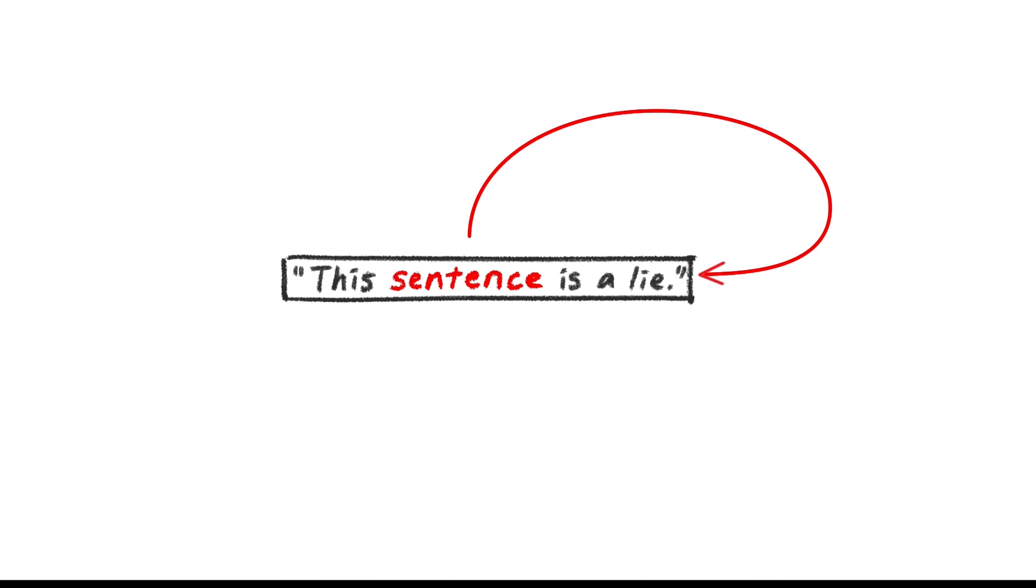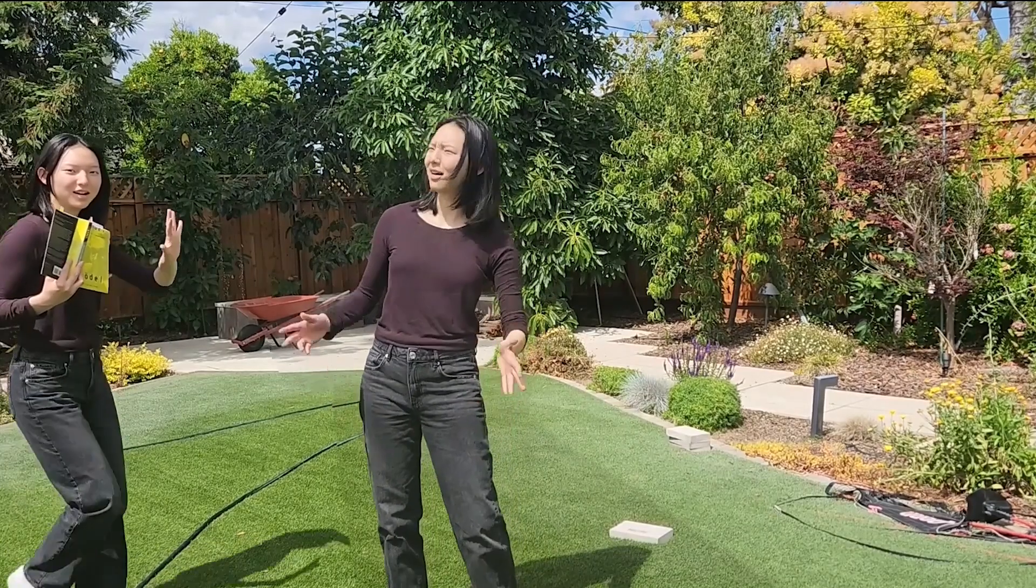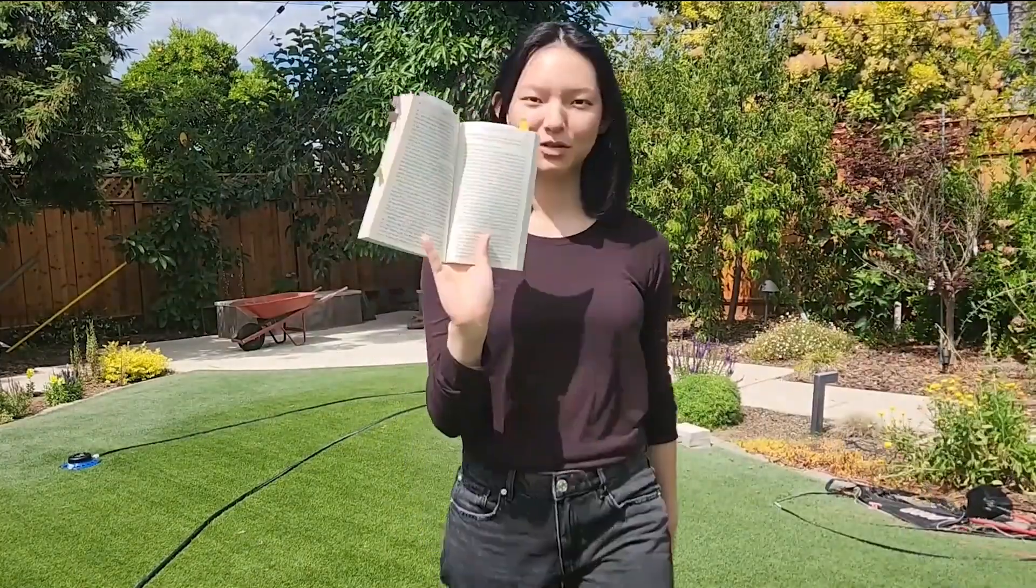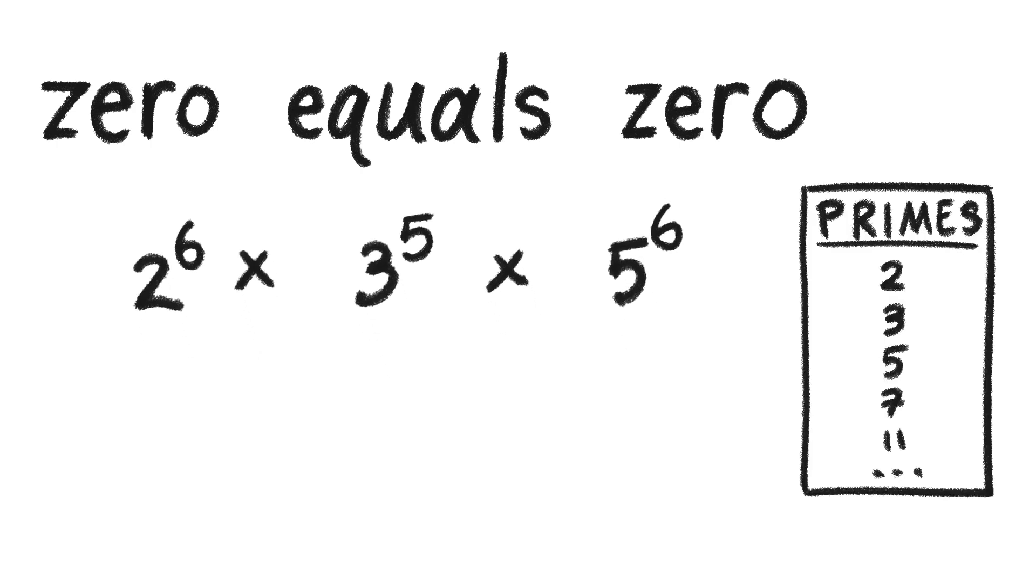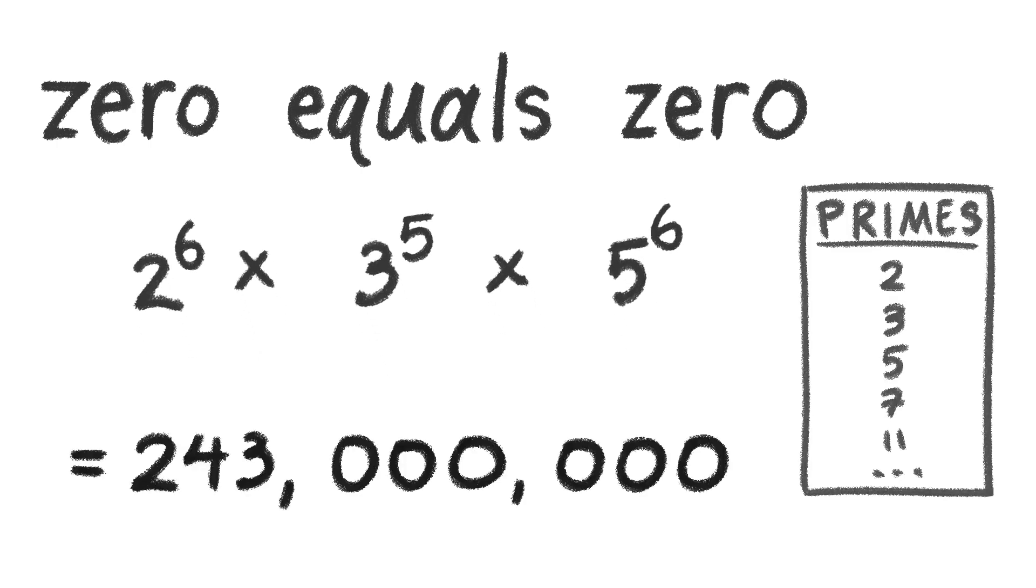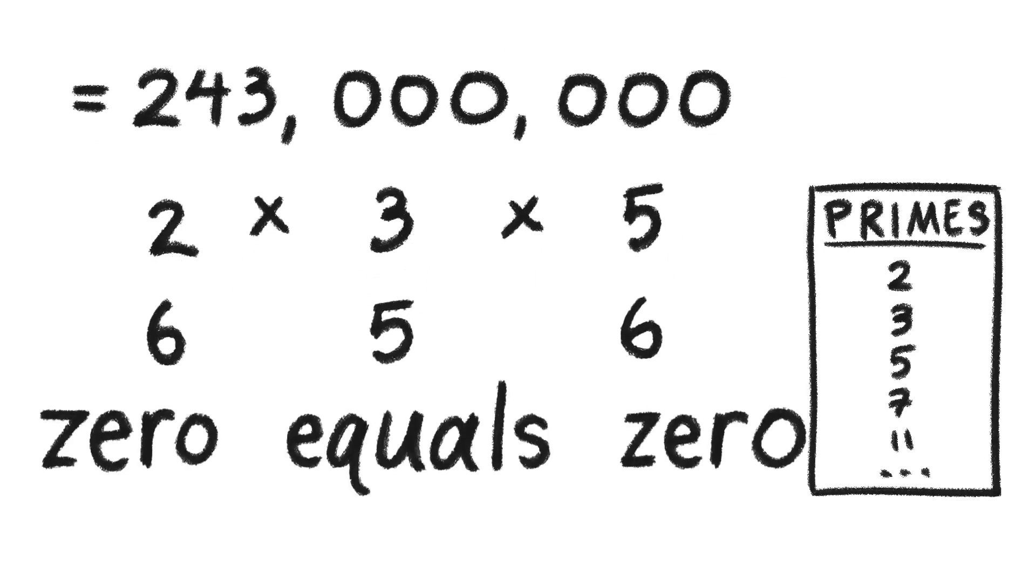So that's exactly what Gödel did with math, by translating sentences into numbers. Here's an example: zero equals zero. The words correspond to numbers, which become the exponents of the first three prime numbers, giving us the Gödel number 243 million. And since numbers have unique prime factorization, we can get back the original sentence.